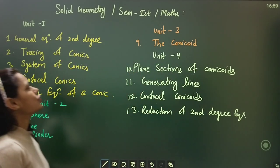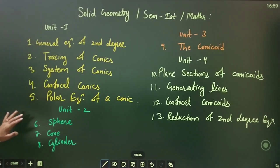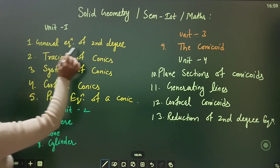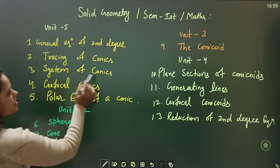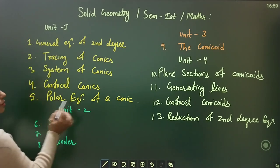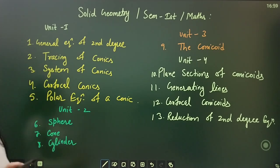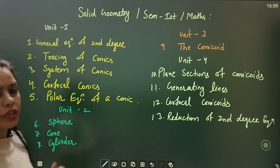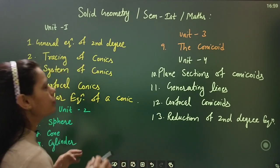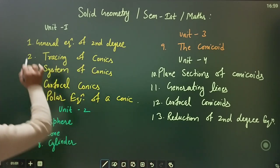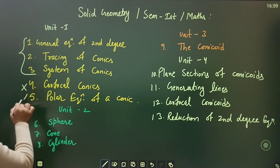The first thing we have is unit one. It is called the general equation of second degree. First chapter: tracing of conics, system of conics, confocal conics, polar equation of conics. If you have a question in your unit, then you should do the first three chapters. Fourth and fifth, skip.